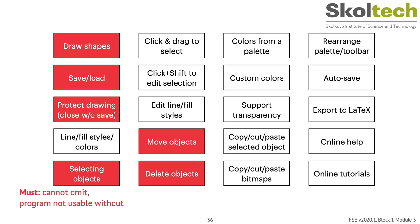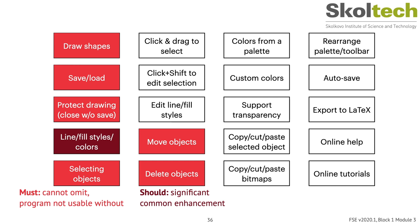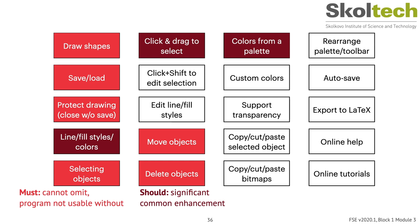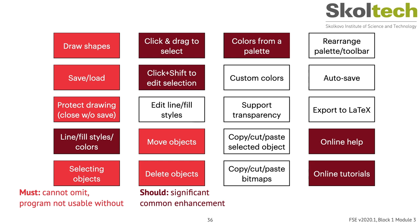To identify Should requirements, examine remaining requirements and ask: does the feature significantly enhance the product? Would users constantly ask why it wasn't included? Is this feature common in similar applications? Several fairly standard drawing features didn't make it to Must: when drawing new shapes, users should be able to indicate line and fill styles including colors from a palette. Click-and-drag selection should be included, as should holding Ctrl or Shift when making selections. Any decent application should also include help and documentation.